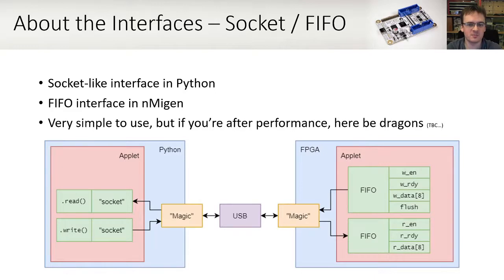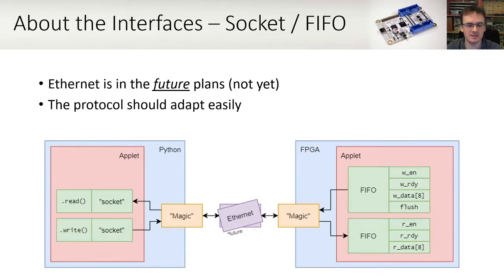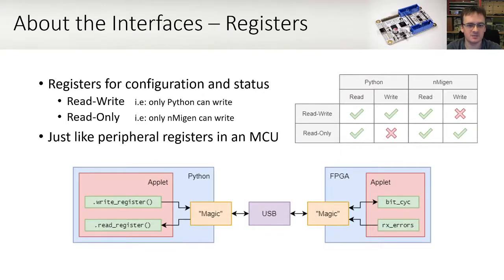There are two interfaces available between the Python and the gateware. The first is the byte stream. From the developer's point of view this looks like a socket in Python and a FIFO in nmigen. Low performance is easy to use and ready to go; however high performance is fiddly and needs careful handling. Future Glasgow revisions are expected to support ethernet, and the protocol should adapt easily. The second interface is registers, and these provide configuration and feedback within the applet's components. They behave just like peripheral configuration registers in a micro. Only one side can write and this is a build time decision. For example, the UART uses it to configure the bit time or the baud rate where the PC writes to the register, and it also uses it to retrieve the receive error count back where the FPGA writes to the register.